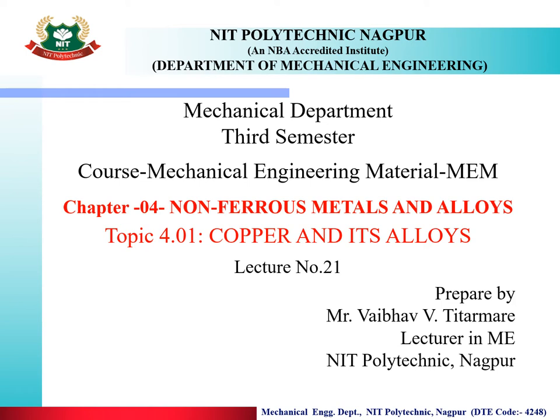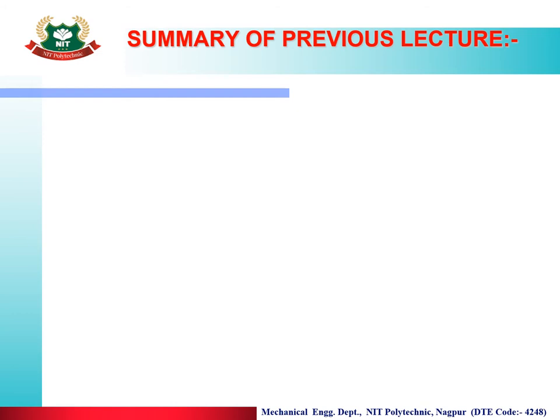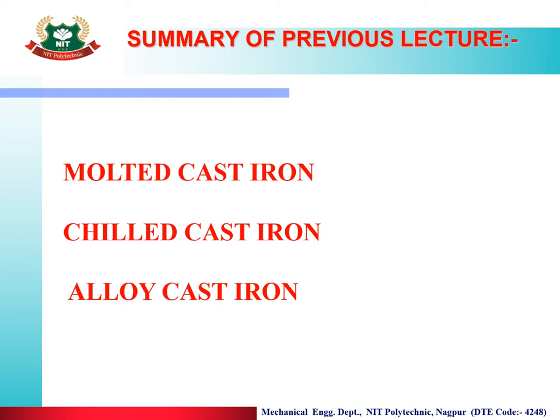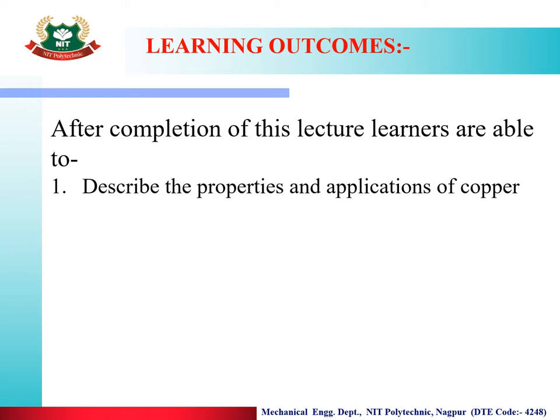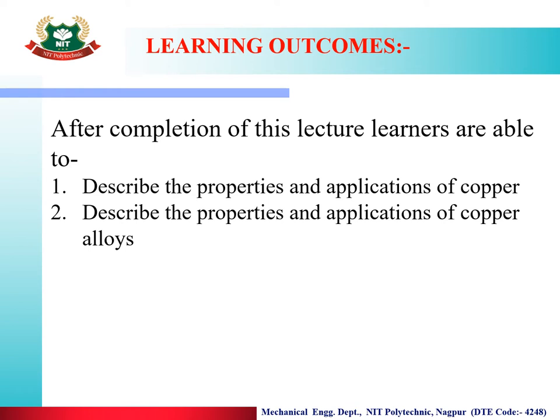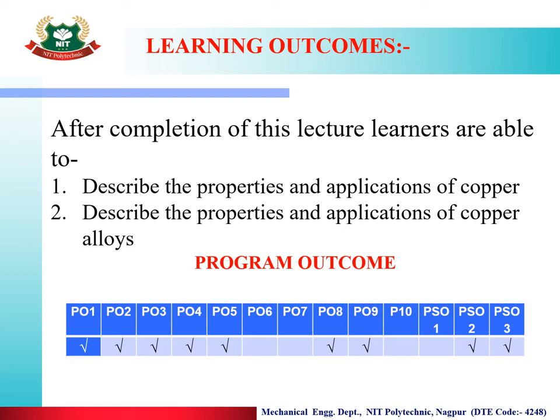Let us summarize the previous lecture. In the previous lecture, we have learned about malleable cast iron, ductile cast iron, and alloy cast iron. I hope you have revised the previous lecture. Learning outcomes: after completion of this lecture, you will be able to describe the properties and applications of copper, and describe the properties and applications of copper alloys.